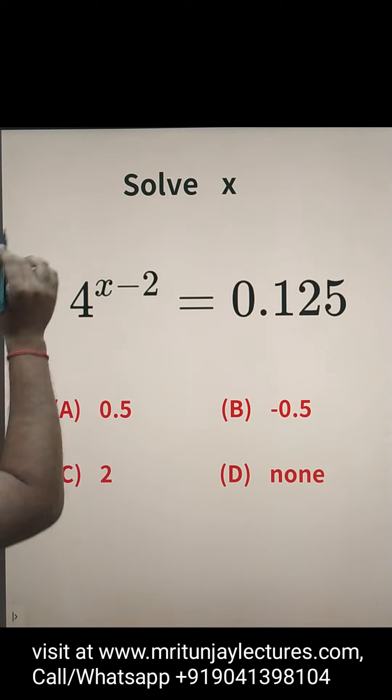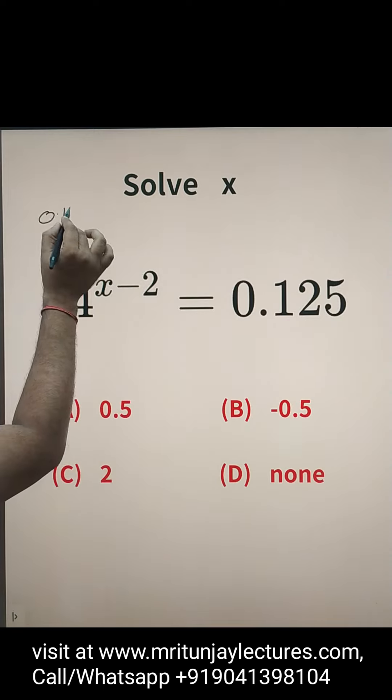Now, how can we determine x? Look here at the equation 4 to the power x minus 2 equals 0.125.